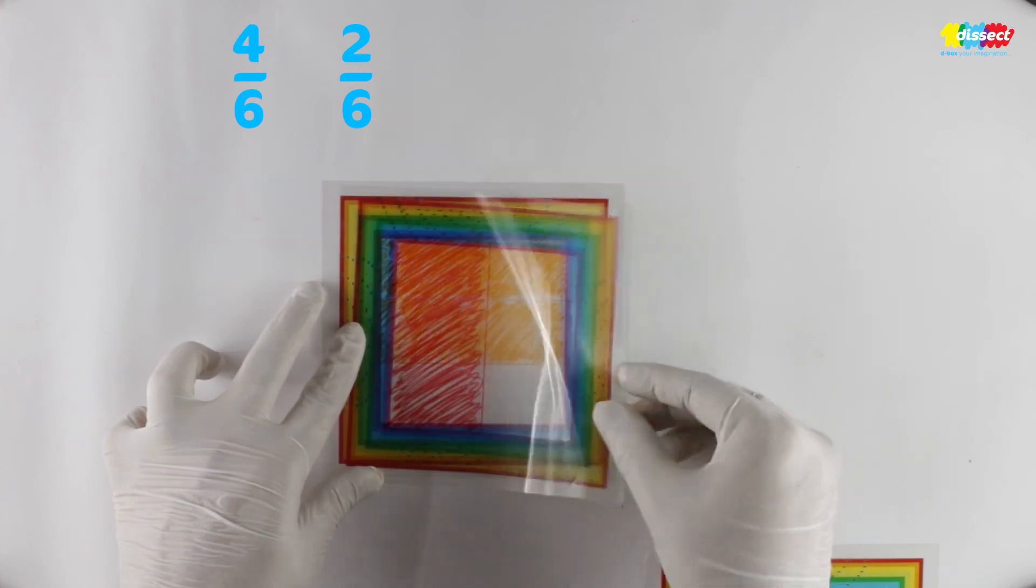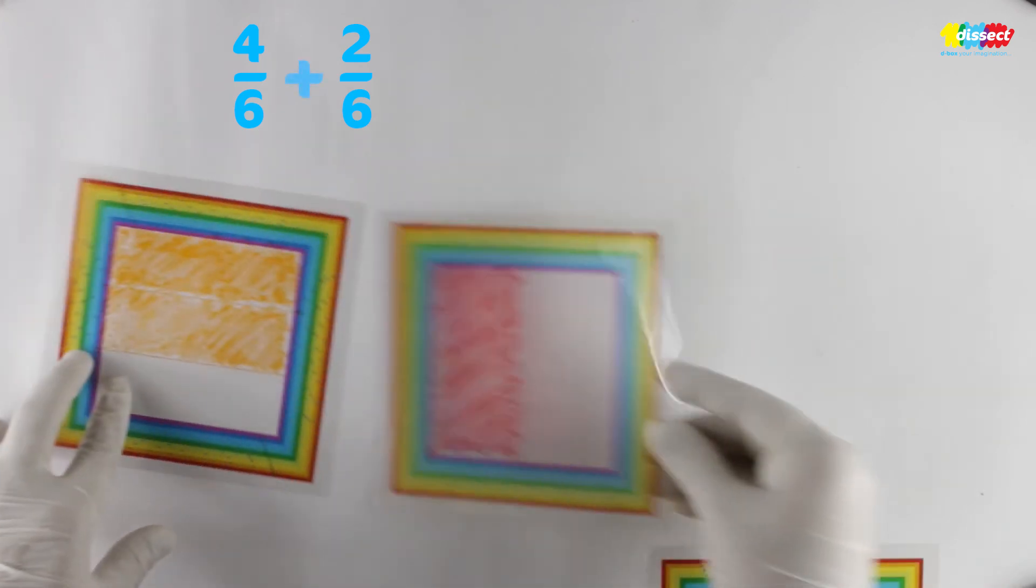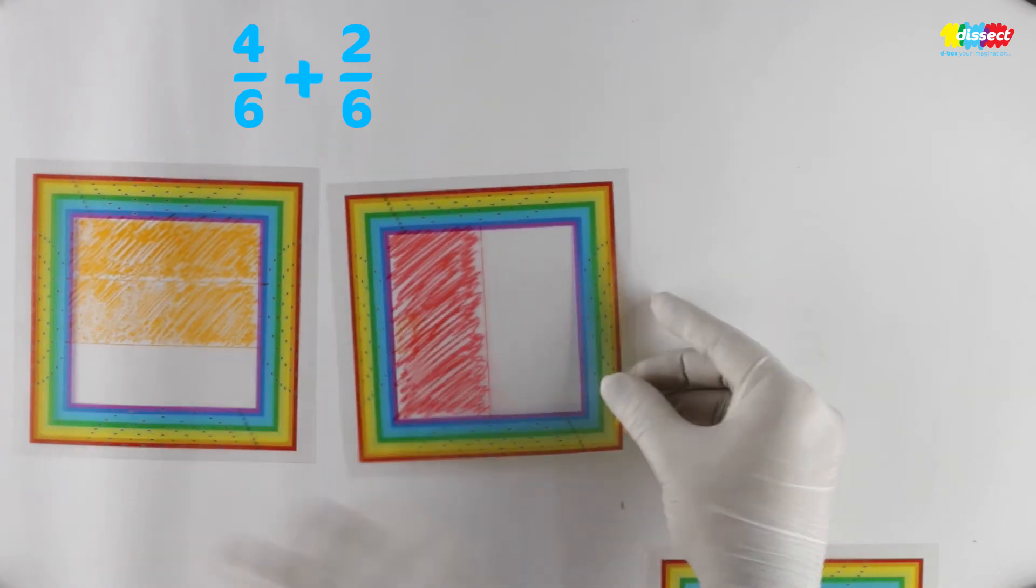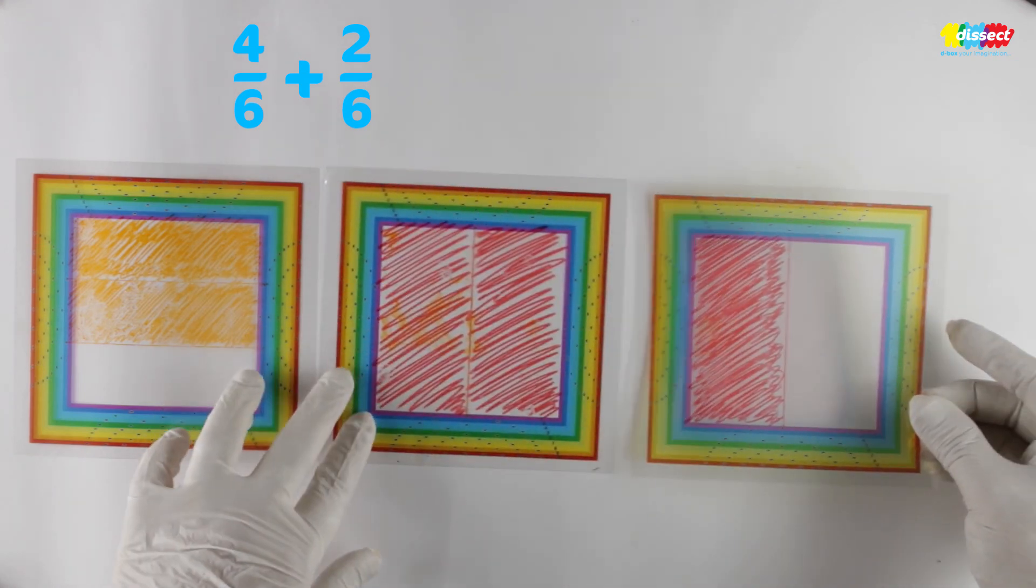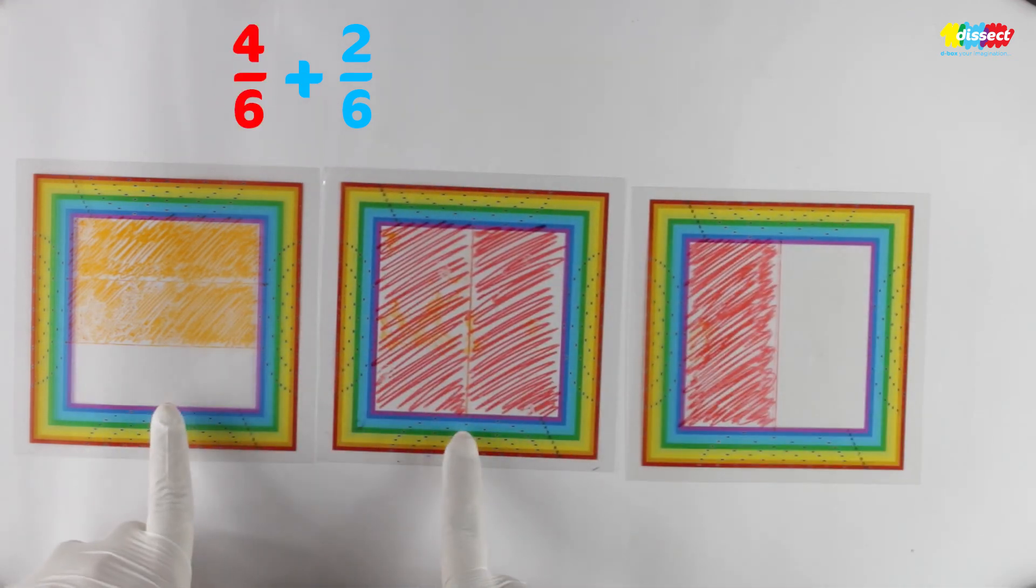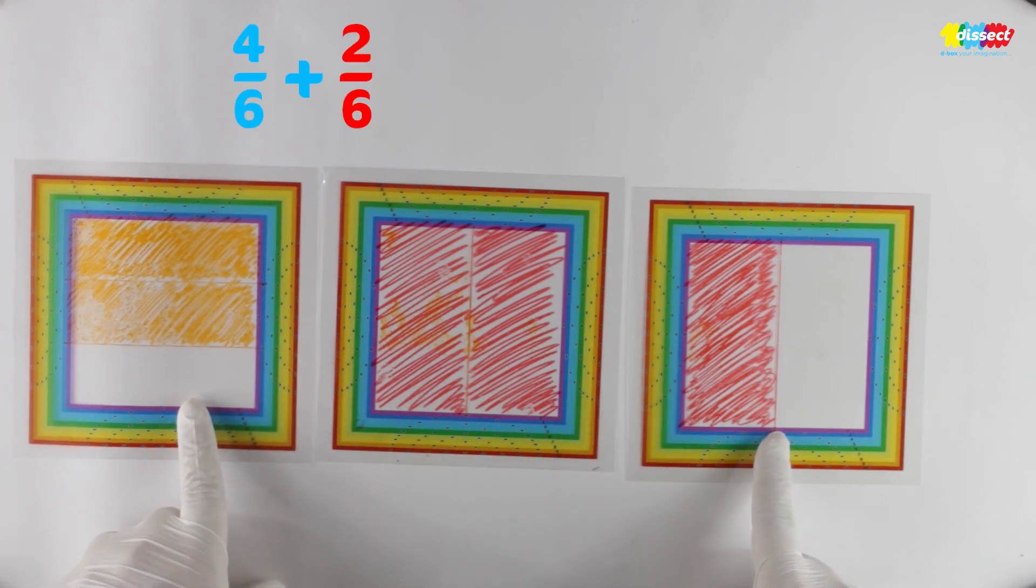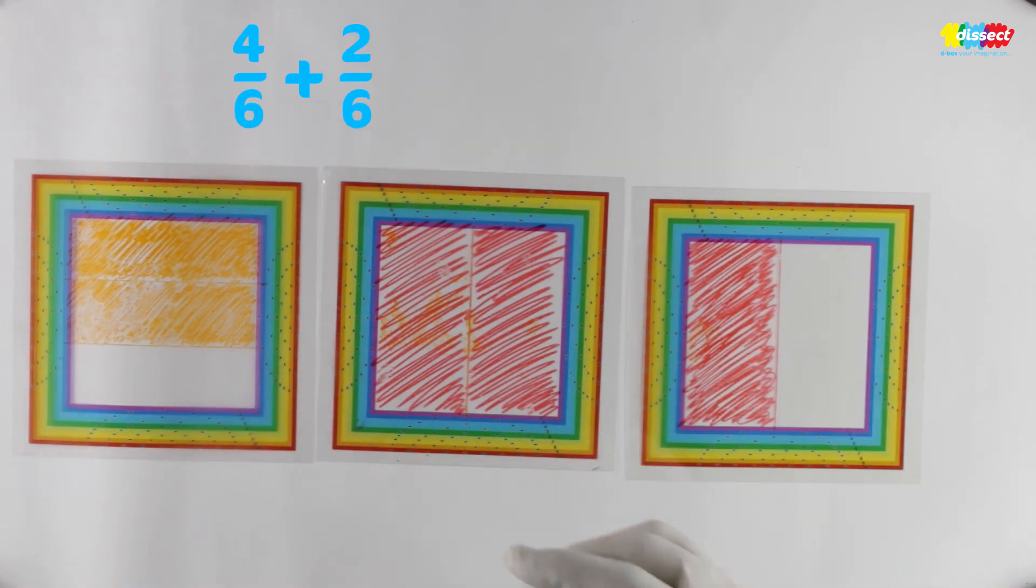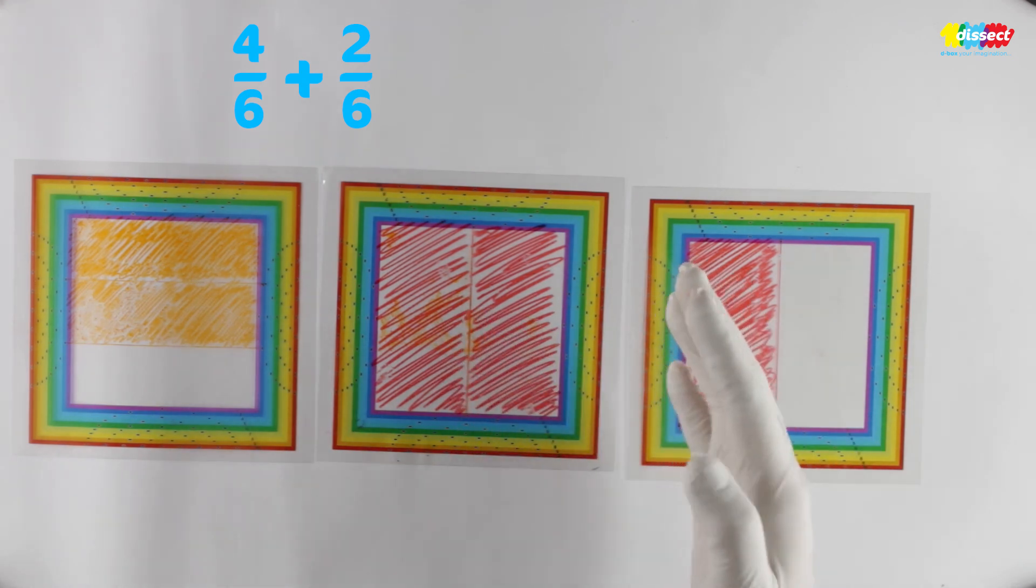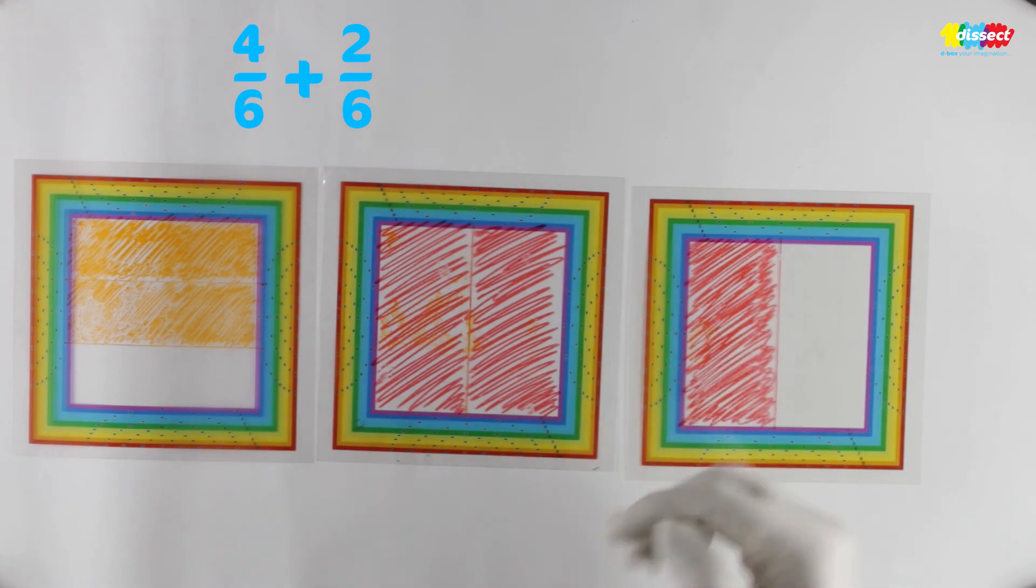And so the sum of what we got as multiplication for these two and then what we got as multiplication for these two is our answer. So it is 4 by 6 plus 2 by 6 which could be written as 6 by 6. And what is that? That is 1.